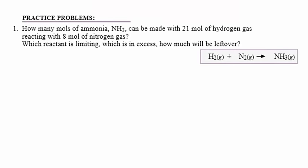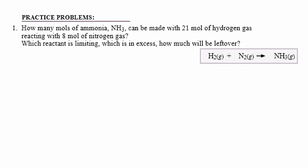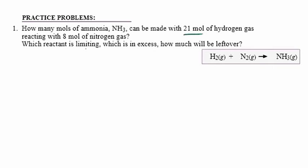Let's do some practice problems with actual chemical reactions. In the first problem: how many moles of ammonia (NH₃) can be made with 21 moles of hydrogen gas reacting with 8 moles of nitrogen gas? We are also going to find which reactant is limiting, which is in excess, and how much of the excess will be left over. Let's label the questions: A — how many moles of ammonia will be made? B — which reactant is limiting? C — which is in excess? D — how much of the excess will be left over?